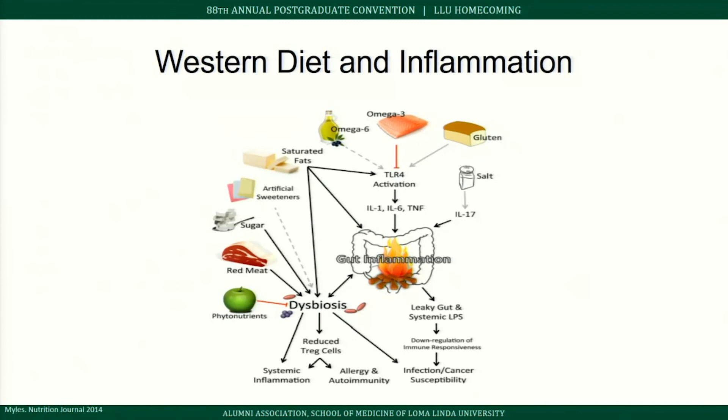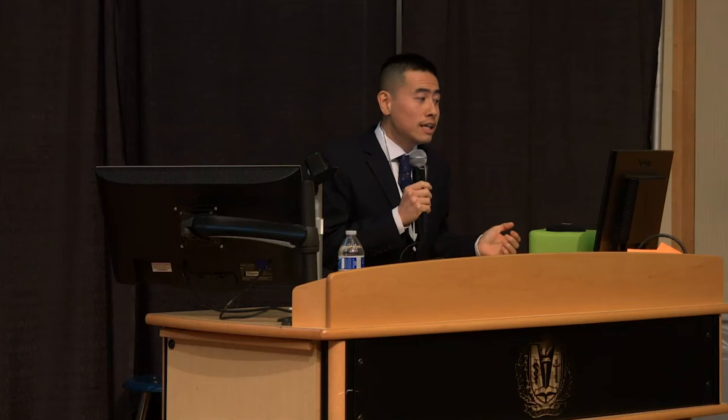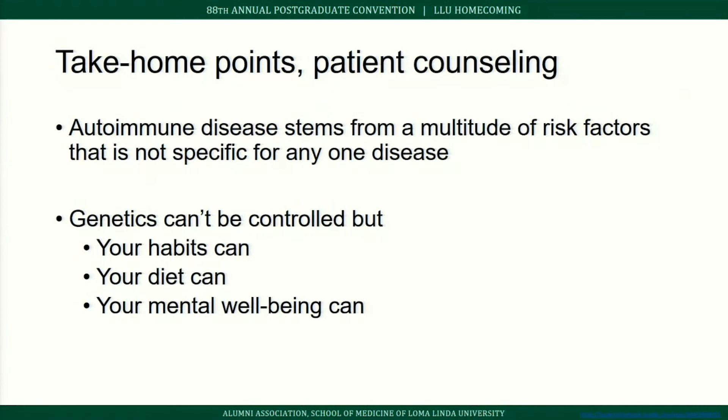To summarize: shift away from the western diet and emphasize fruits, vegetables, and fiber. Anti-inflammatory pathways are linked to omega-3 fatty acids, phytonutrients, and fiber. Pro-inflammatory factors — red meat, sugar, omega-6 fatty acids, saturated fat, and salt — can damage gut microbiota and induce gut dysbiosis. Take-home: autoimmune disease stems from a multitude of factors including genetics and lifestyle. Your genetics cannot be controlled, but your habits, diet, and stress levels can.